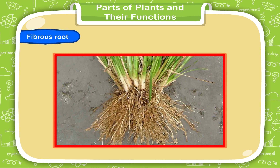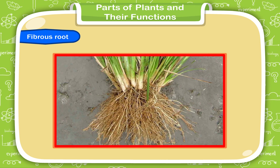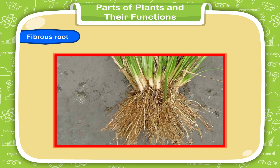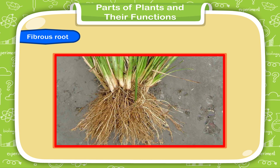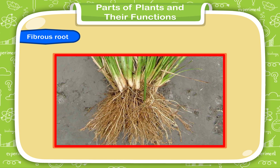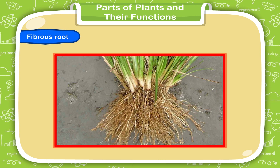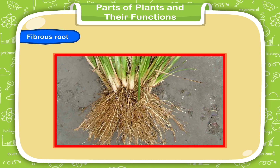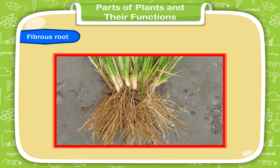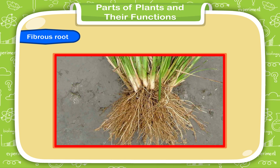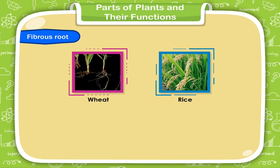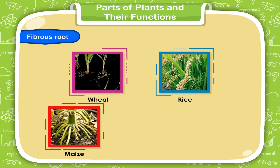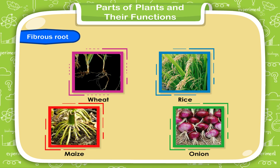Fibrous Root. This type of root has no main root. Many tiny, thin roots grow like a bunch below the stem. The roots of the plant spread out in the soil. Plants like wheat, rice, maize, and onion have fibrous roots.